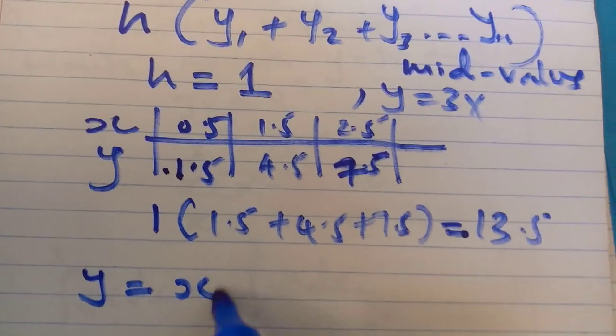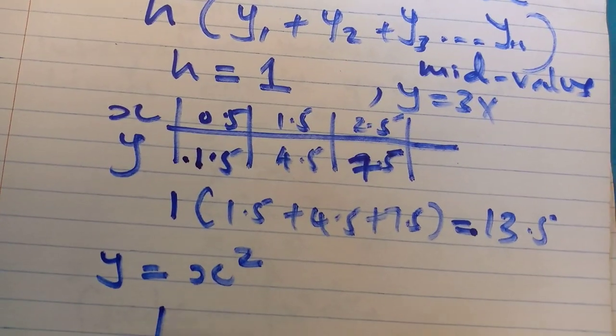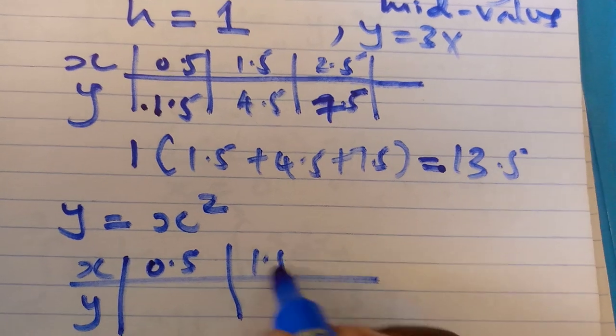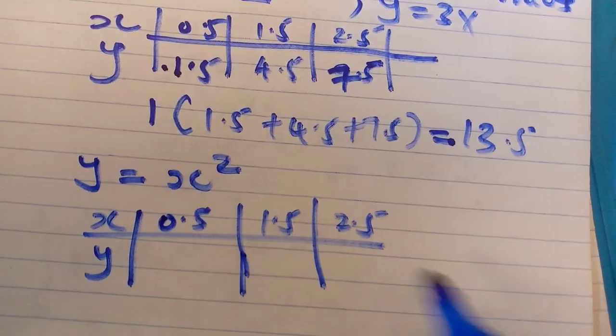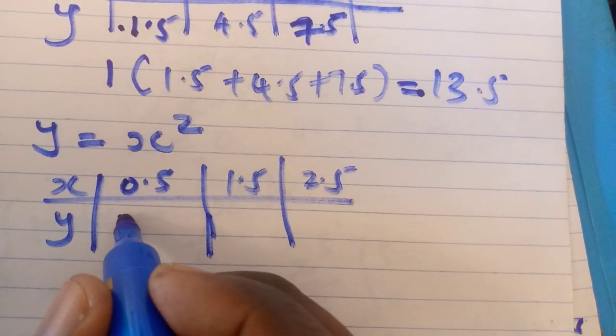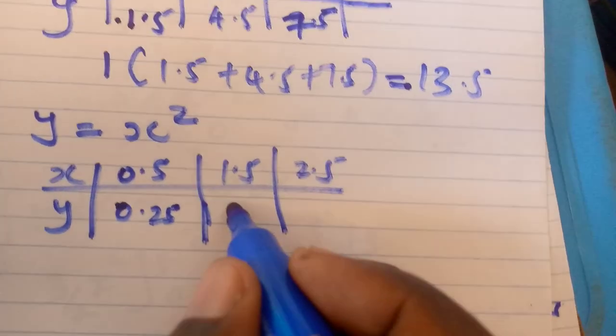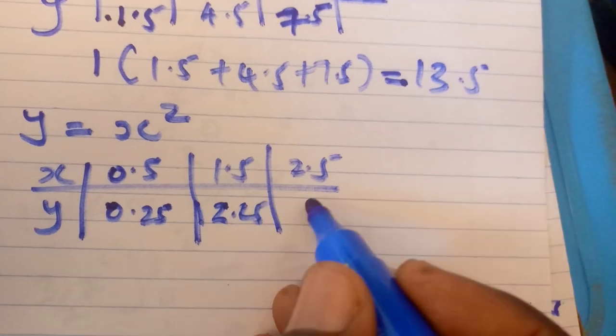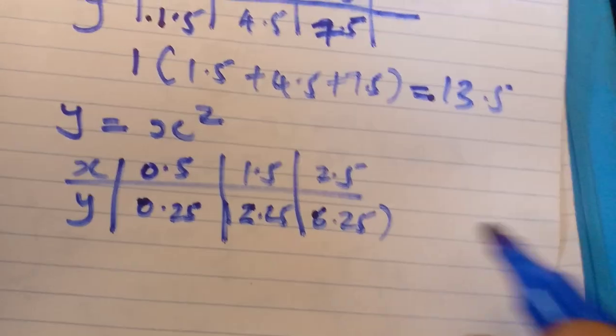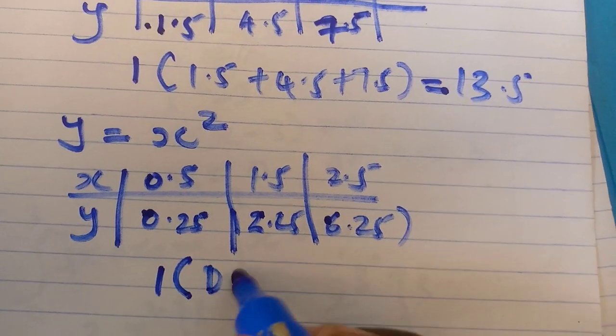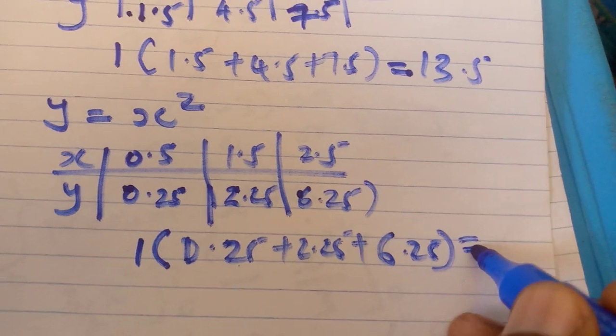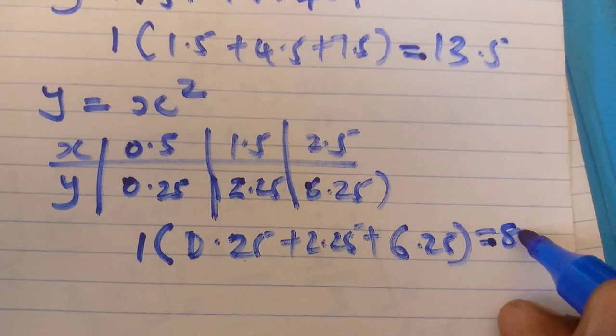Then I'll substitute again in x squared: 0.5, 1.5, 2.5. When I substitute, I get 0.25, 2.25, 6.25. You get 8.75.